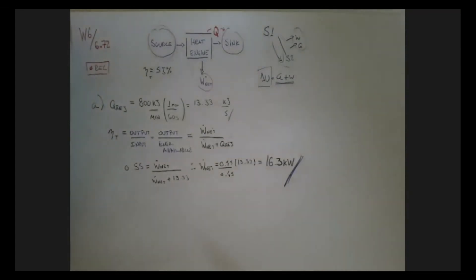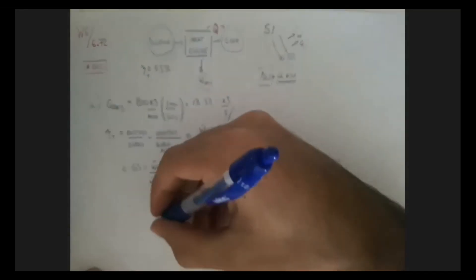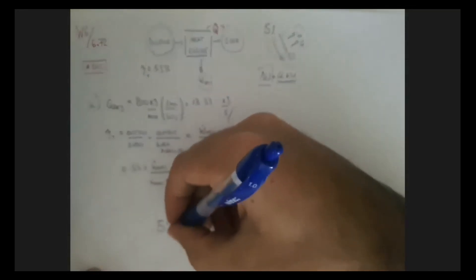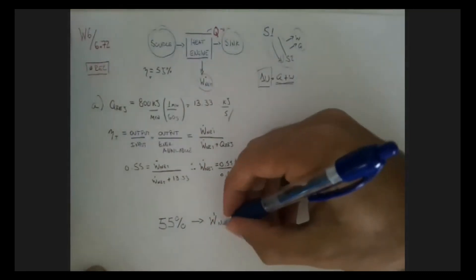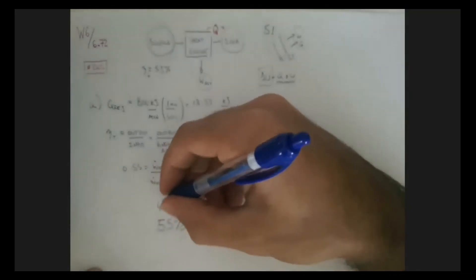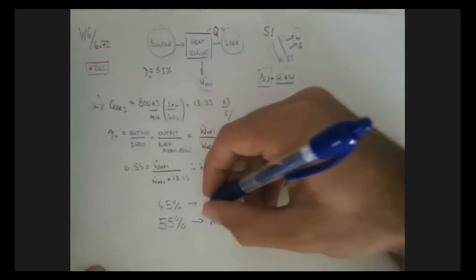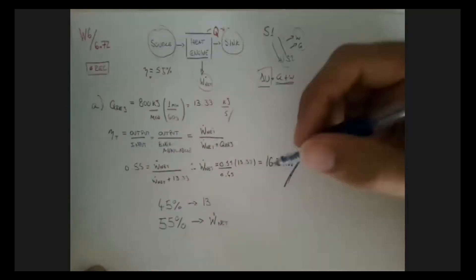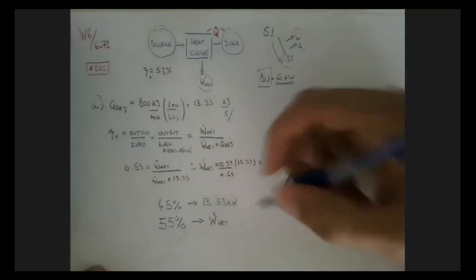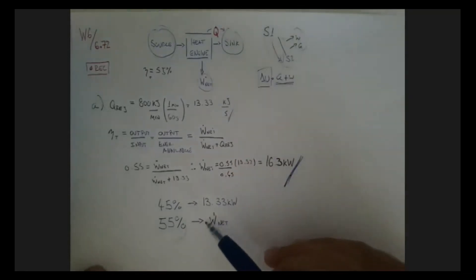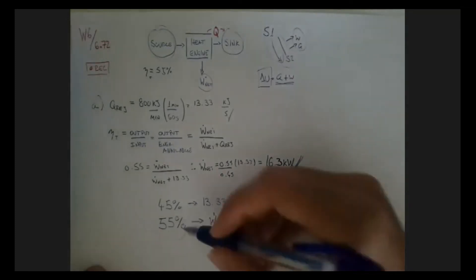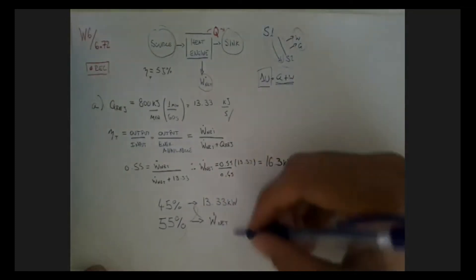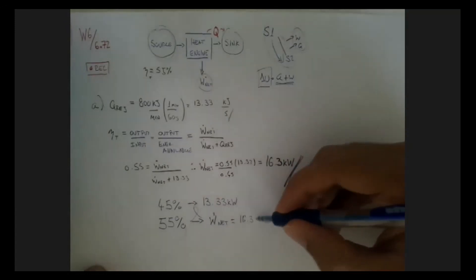There's another way to do it — think of it in terms of proportion. If 55% is the efficiency, that's the work being output. Whatever is the rest, 45%, is what was not useful — that's our Q_rejected of 13.33 kJ/s. So in proportion, it's 55 times 13.33 divided by 45, which gives the same 16.3 kilowatts.